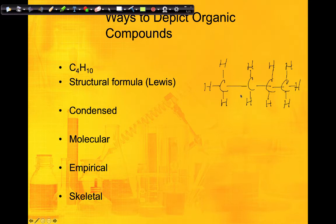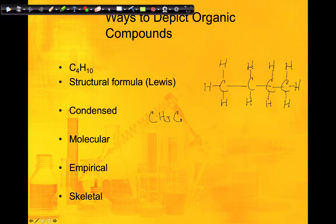The condensed structure is one of the most common ways IB likes to show organic compounds. You focus on the chain: the first carbon bonds to three hydrogens, so we write CH₃. The next carbon bonds to two hydrogens, so it's CH₂. The next is also CH₂, and the final carbon bonds to three hydrogens. So the full condensed structure would be CH₃CH₂CH₂CH₃.